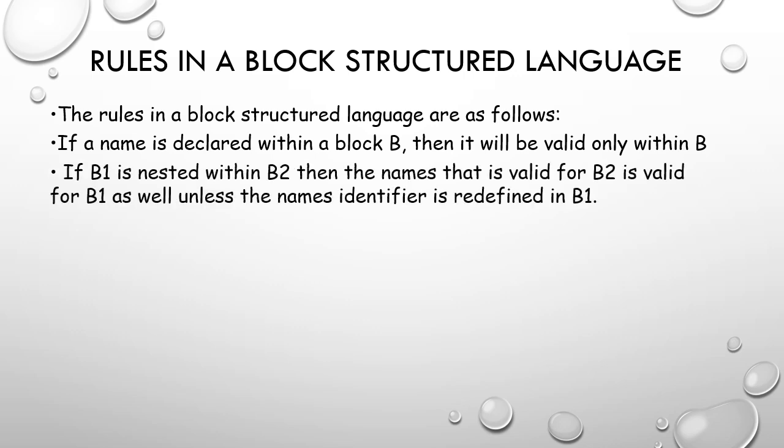In a nested block, where B1 is the inner block and B2 is the outer block, names defined in B2 are also valid for B1. However, names defined inside B1 are valid only for B1 and not for B2. Additionally, if the same name is defined in B2 and redefined inside B1, that is allowed. The rule is: names valid for B2 are valid for B1 as well, unless that identifier is redefined in B1.